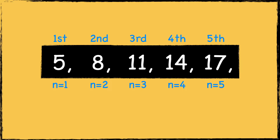Finding the first 10 numbers in this sequence is pretty straightforward, as we just keep counting up in threes. However, finding larger positions, such as the fortieth term, would be time consuming. Therefore, we use a formula to determine any term in the sequence, which is called the nth term expression.